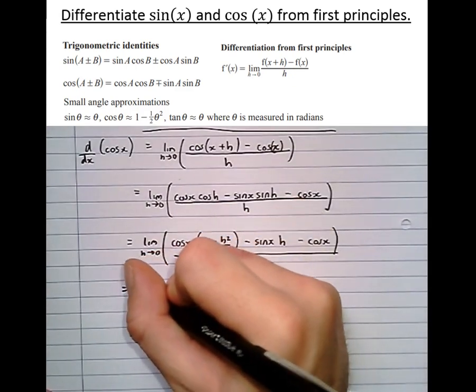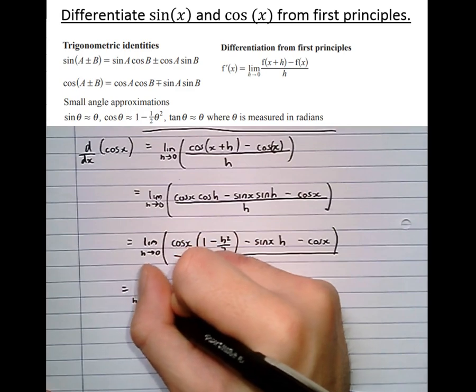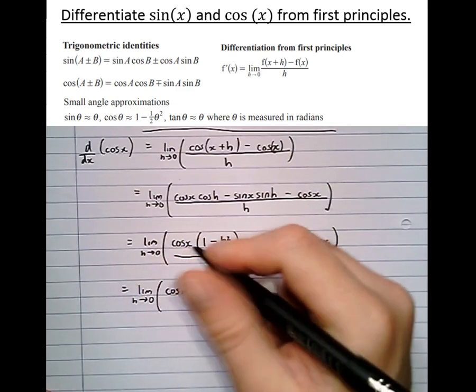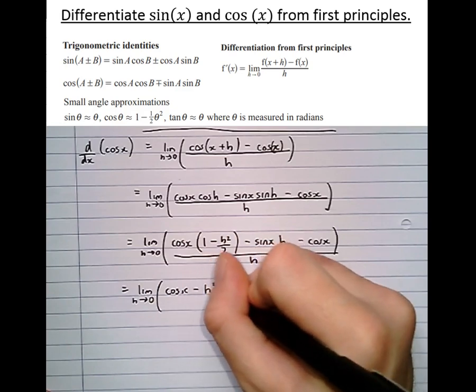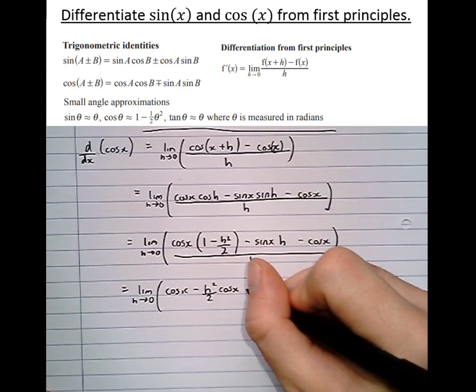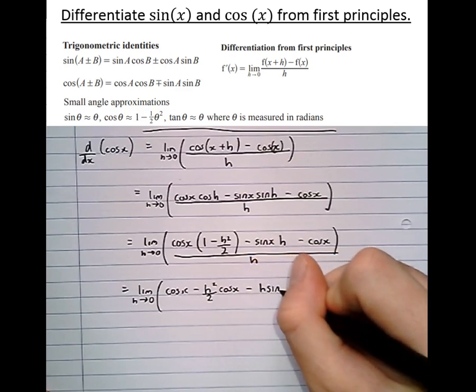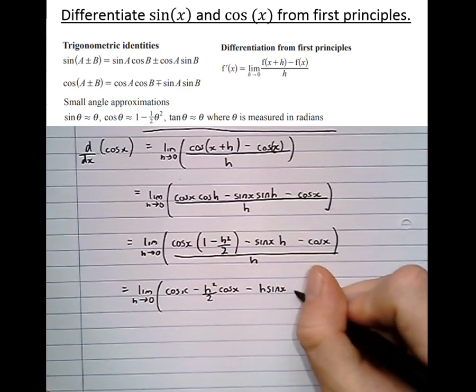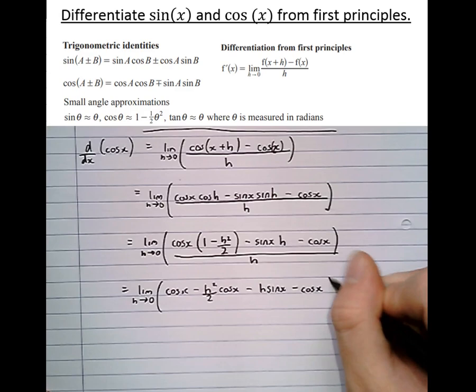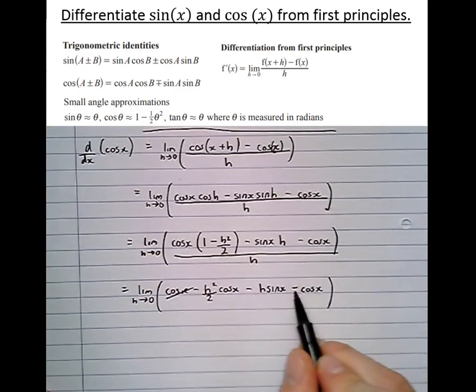Expanding this bracket now, so the limit as h approaches 0 of cos x minus h squared over 2 cos x minus h sin x, writing that in a different order putting the h at the front, take cos x. Cos x take cos x is 0.